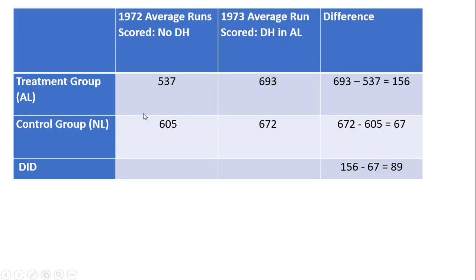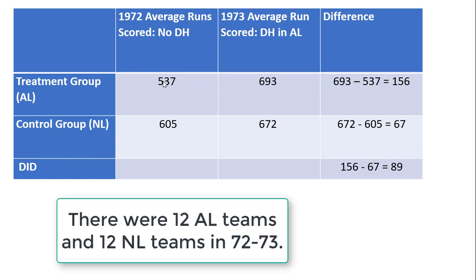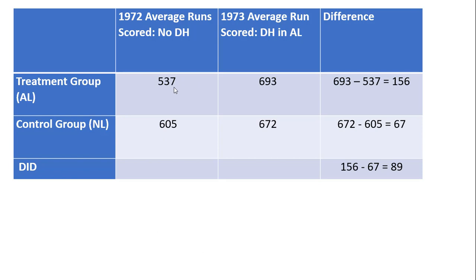Here is the table. For American League teams, the 1972 average runs scored per team for the entire season — before the DH rule — was 537 runs. National League teams averaged 605 runs in 1972. In 1973, the year the DH rule went into effect, American League teams averaged 693 runs for the season — about 162 games. National League teams in 1973 averaged 672 runs.